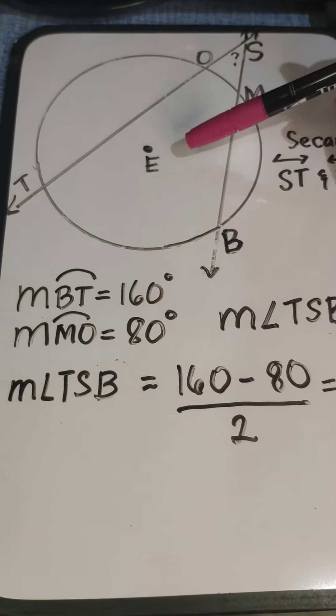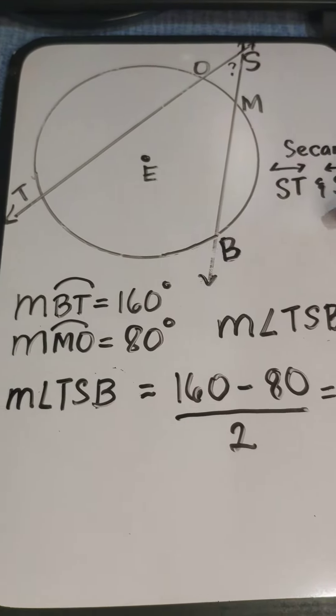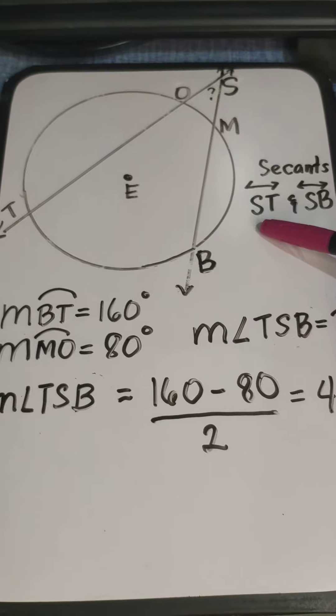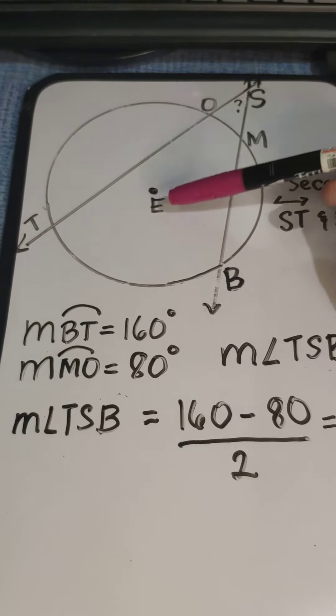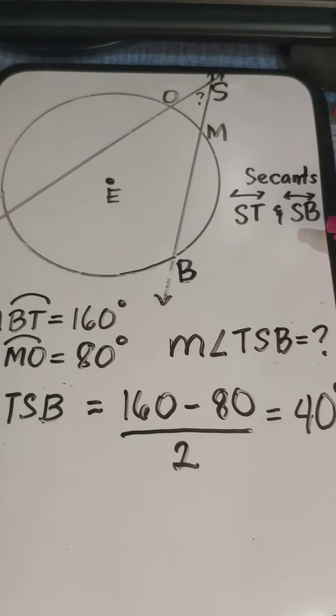We have here circle E and then two lines, line ST and line SB. Line ST is what we call secant because it intersects circle E at two points, point T and point O. The same with line SB.